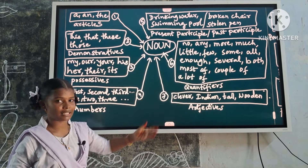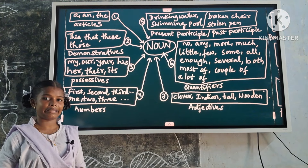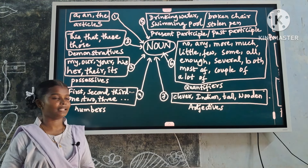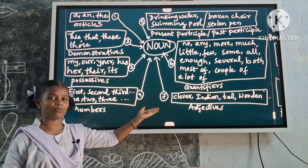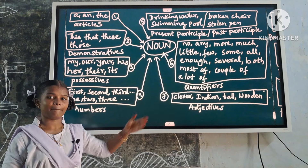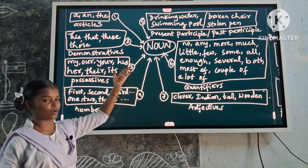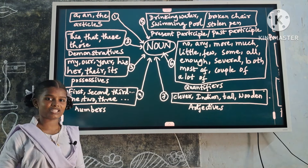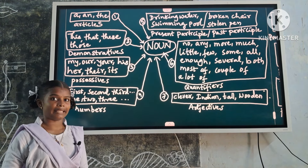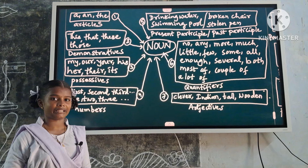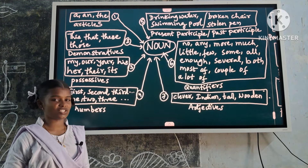Next one: adjectives — clever, Indian, tall, wooden. These are noun modifiers because they describe the noun. Examples: clever boy, Indian boy, tall boy, wooden child.